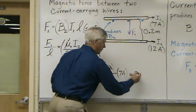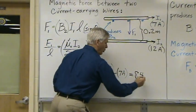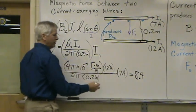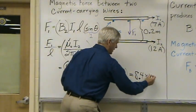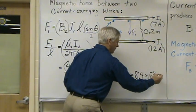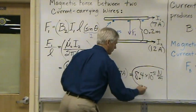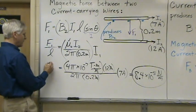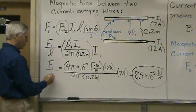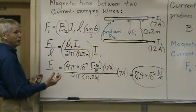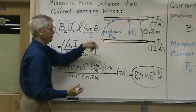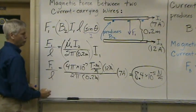So that's going to be 8.4, when you do all the math, times 10 to the minus 5th newtons per meter. So that's the value of the force on wire 1 from this magnetic field per length.